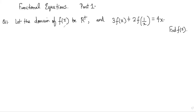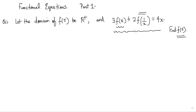In functional equations problems like this, the idea is to treat f(x) as an unknown. Here we have two unknowns: f(x) and f(1/x). With one equation and two unknowns, if we can get another equation with the same two unknowns, we can use simple elimination techniques to solve for f(x). That's a pretty standard technique, and this problem is fairly easy because of that.